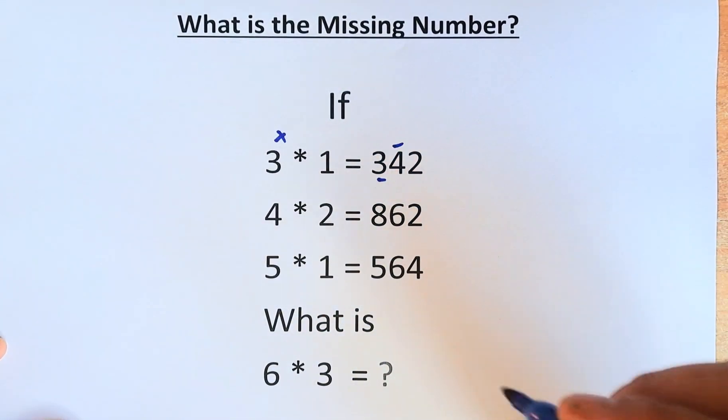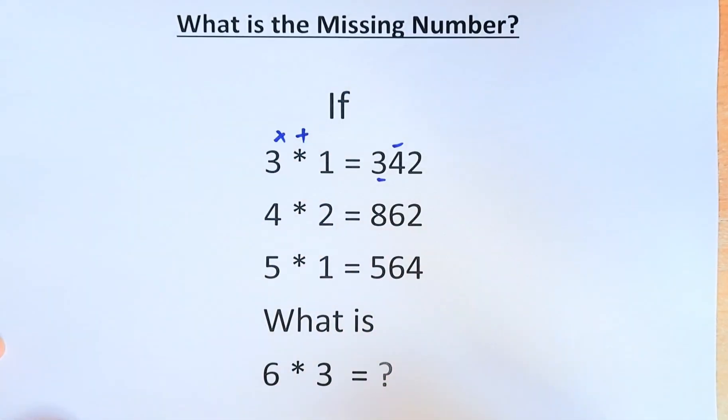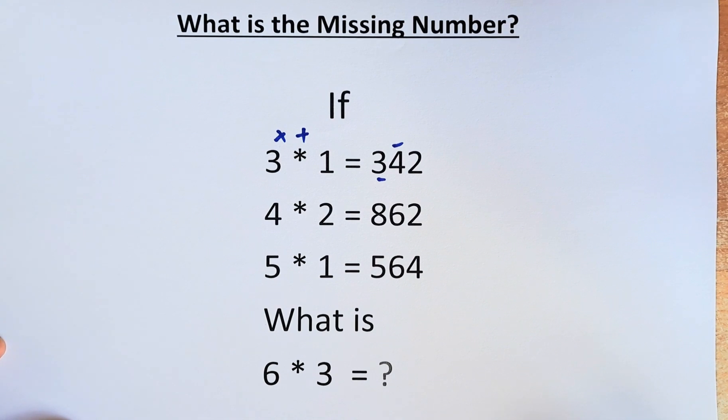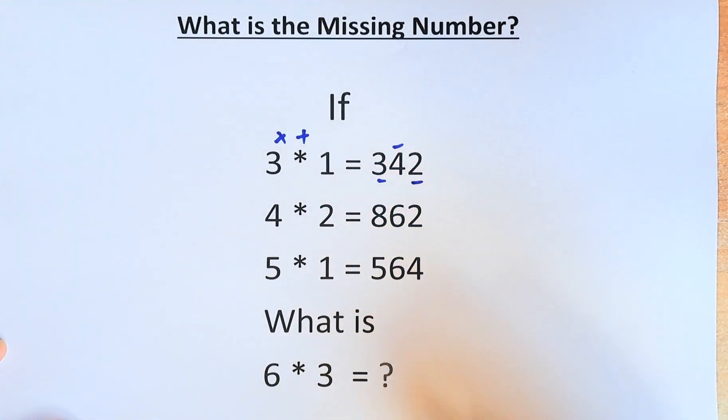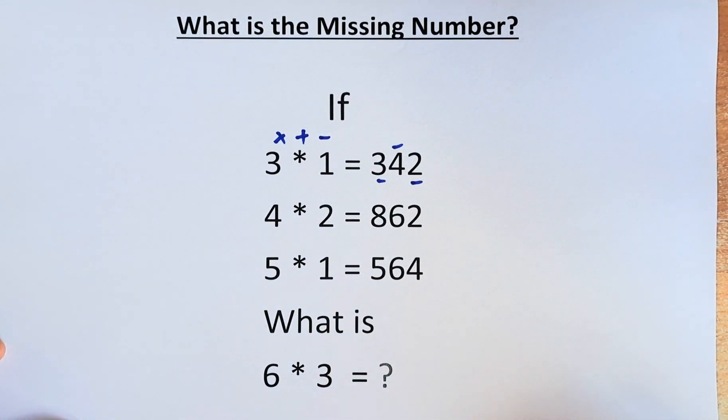To get the second number 4, we are going to add: 3 plus 1 equals 4. And to get the last number 2, you subtract: 3 minus 1 gives you 2. So the first number you multiply, the second number you add, and the third number you subtract.